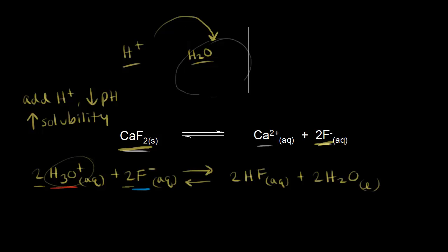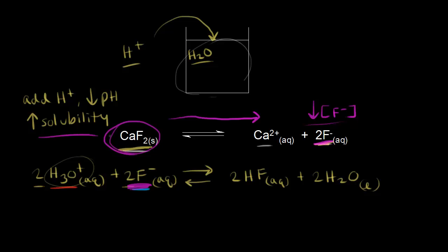Let's think about what we're doing to the concentration of fluoride ions in solution. The fluoride ions are reacting, so we're decreasing their concentration. Remembering Le Chatelier's principle — a system disturbed from equilibrium will shift to relieve the applied stress — the stress here is the decreased concentration of one of our products. So our equilibrium shifts to make more product, meaning more calcium fluoride dissolves, and we've increased its solubility.